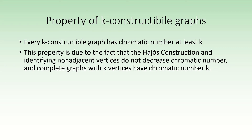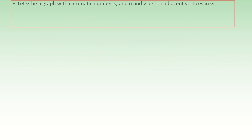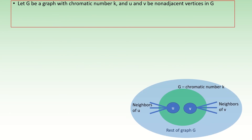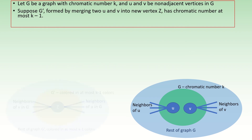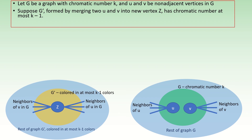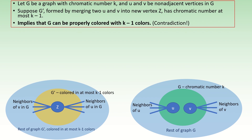First, let's look at the operation of merging non-adjacent vertices. Suppose we had some graph G with chromatic number k, with non-adjacent vertices u and v, and that the graph G' formed by merging vertices u and v into a single vertex z had chromatic number at most k minus 1. Then this implies there's a proper coloring of the original graph with at most k minus 1 colors — a contradiction.